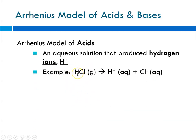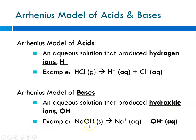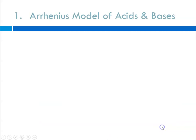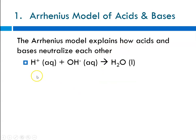An example of an Arrhenius acid: if you bubble hydrogen chloride gas through water, you release the hydrogen ion and the chloride ion. According to the Arrhenius model, a base is anything whose aqueous solution produces hydroxide ions. For example, if you dissolve sodium hydroxide pellets in water, you get aqueous sodium ions and aqueous hydroxide ions. The Arrhenius model also explains neutralization — the net ionic equation is H⁺ meeting OH⁻ to form water.